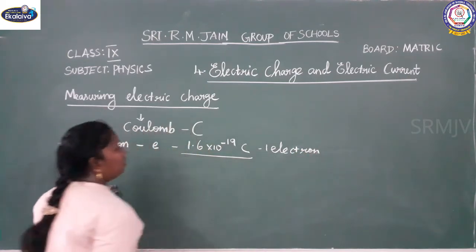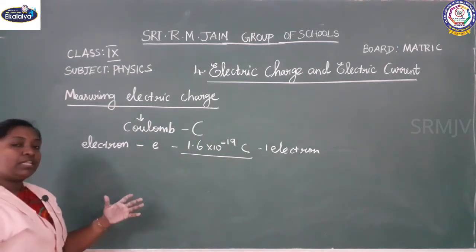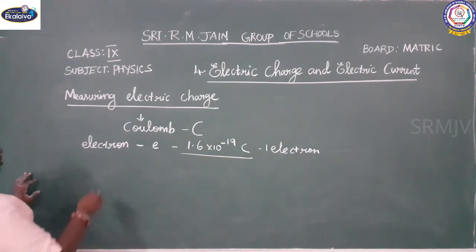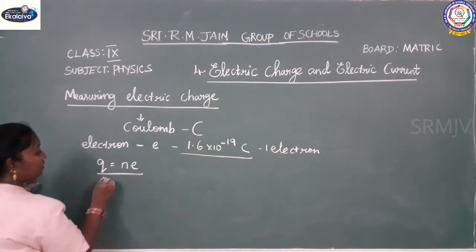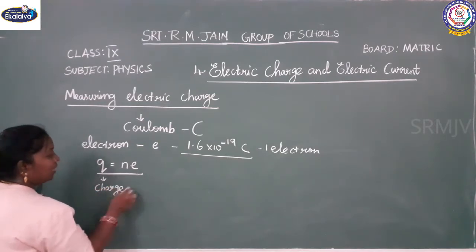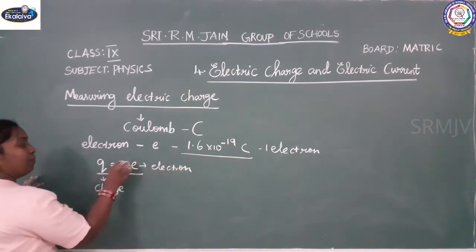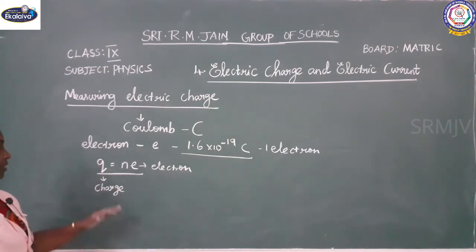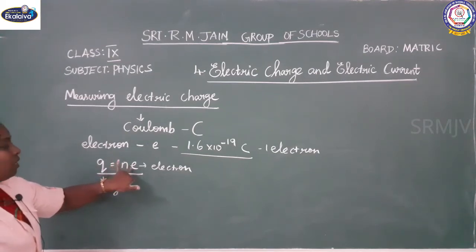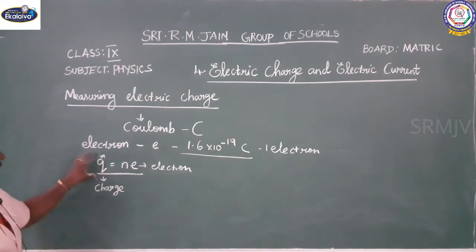This is the value for one electron. By knowing the value of one electron and multiplying it, you can measure any number of electric charges. The formula is: Q = ne, where Q is the charge, e is the electron charge, and n is the number of electrons — it can be 5, 6, or any number. By multiplying, you can find the quantity of charge using this formula Q = ne.